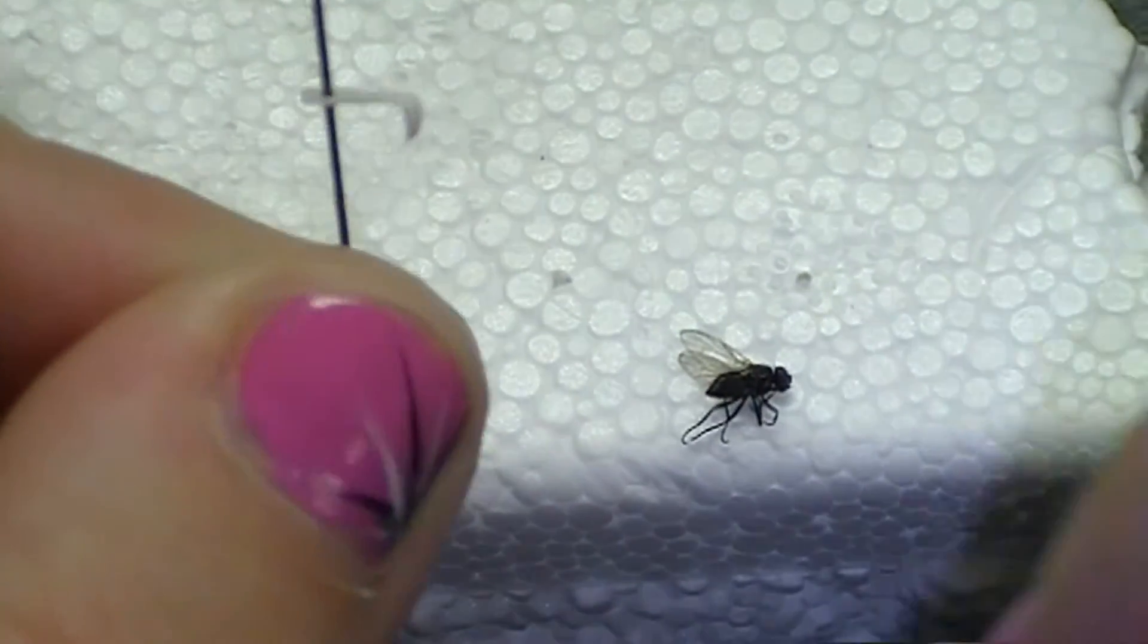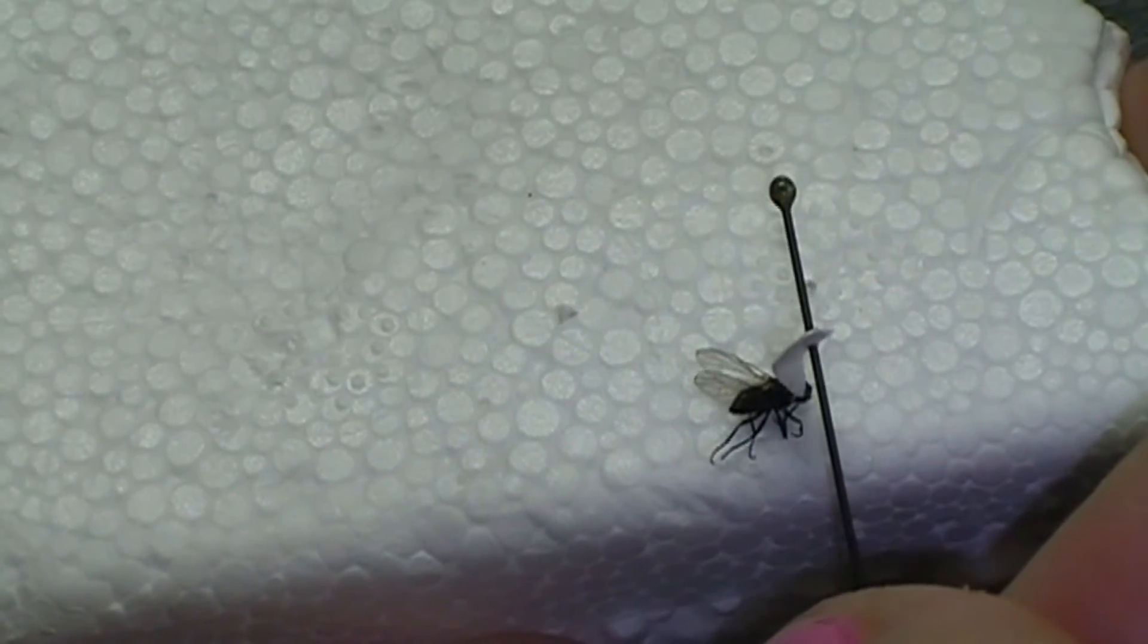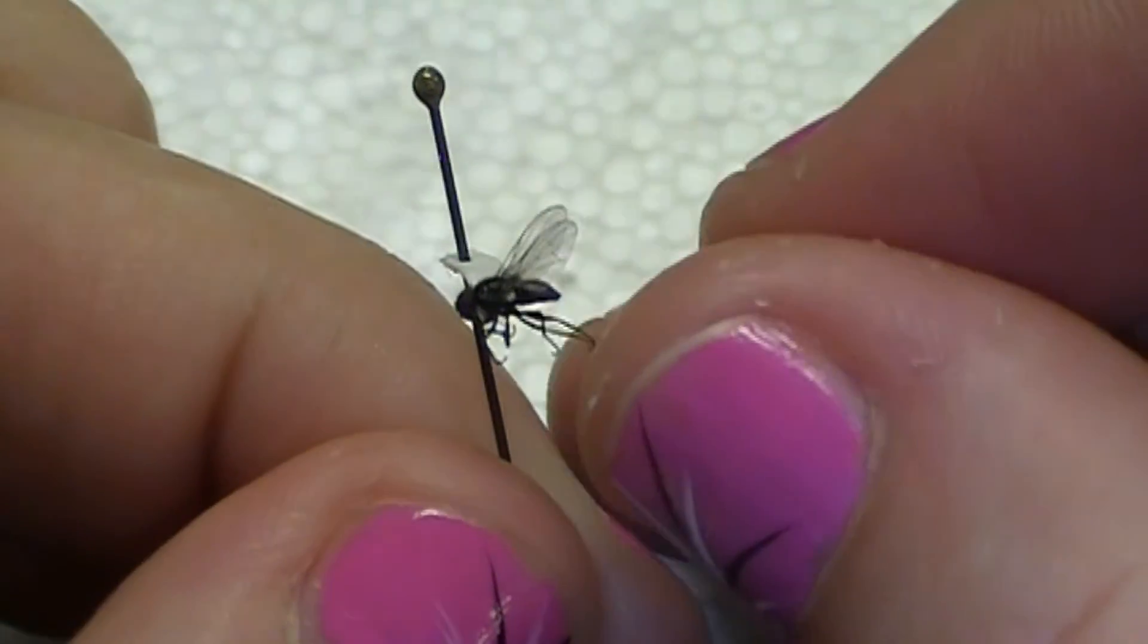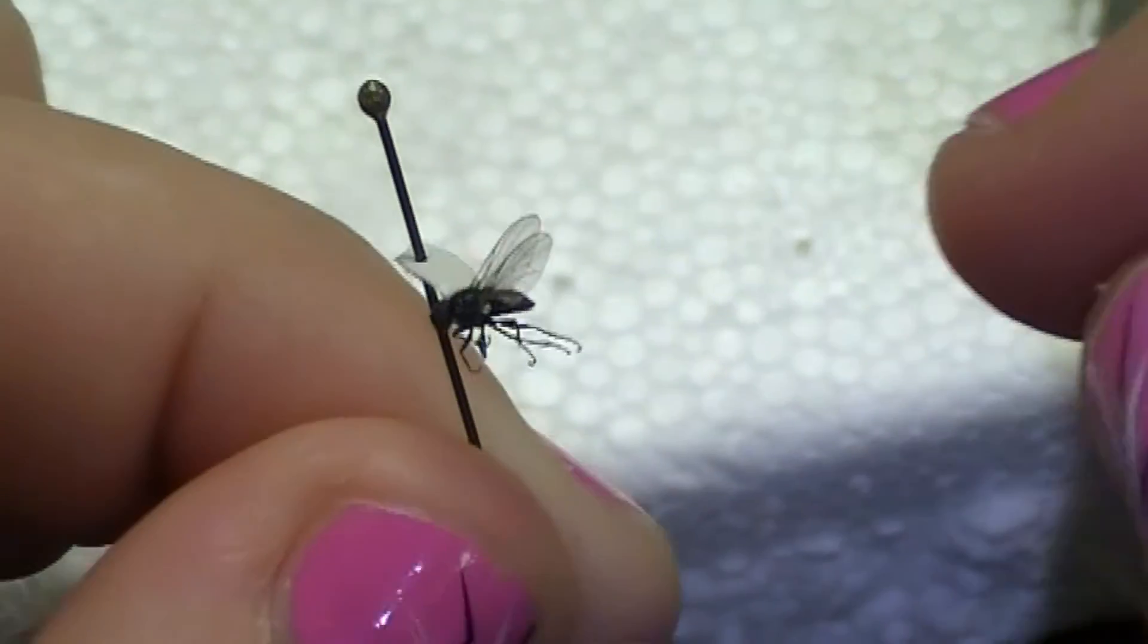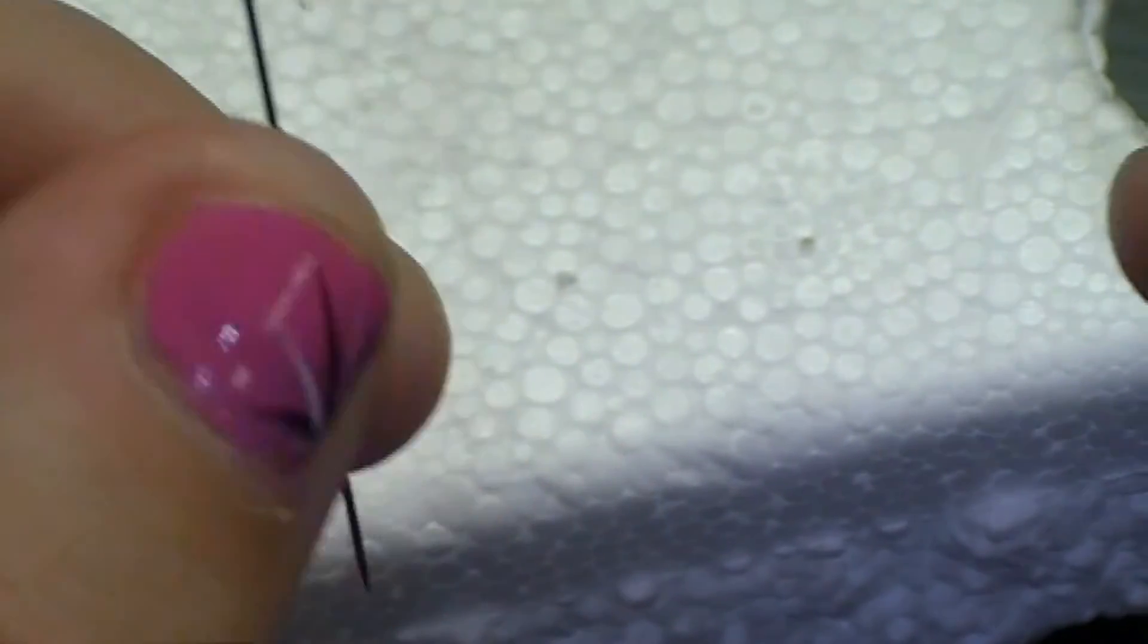You're just going to let it sit for a minute, just kind of get a little bit tacky. Then you're going to lightly dab the side of the point to the side of the insect. If you don't like how he's positioned or if he's not quite straight, you can nudge him around a little bit.